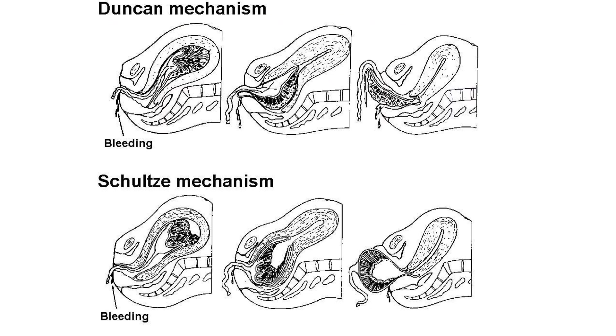Here you can see the picture of Matthew Duncan's method and the Schultze's mechanism — the central separation and marginal separation.